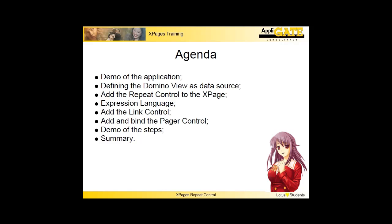Repeat controls give you more control over the data you want to display than a view control. In the body of the repeat control I will add a label control and a link control to display a sequence number and the title of the book. I will also add a pager control for navigation, which I will bind to the repeat control. I use the link control because I wanted to publish the title of a book in a composite application when the user clicks on the link. In another instruction video, I will show how to do this.